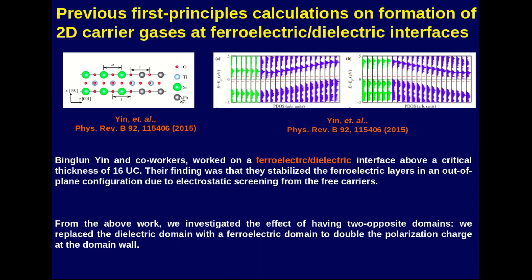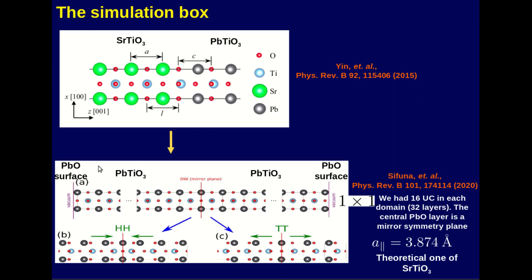Yin obtained results showing the stabilization of two-dimensional conducting systems, with a signature of electronic reconstruction. The band bending arises from a remnant depolarizing field resulting from incomplete screening. We then asked: what happens if we substitute the strontium titanate with lead titanate? In our case, we replace strontium titanate with lead titanate on both sides, so we have a lead titanate–lead titanate interface.